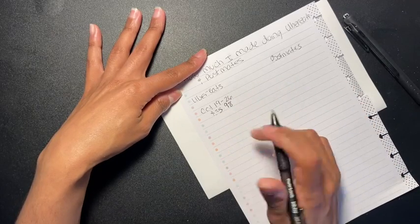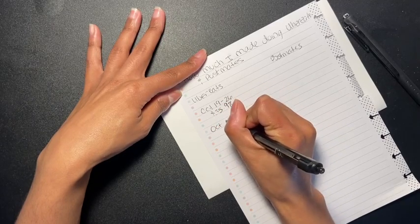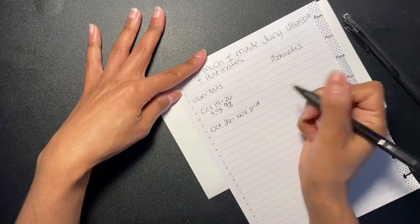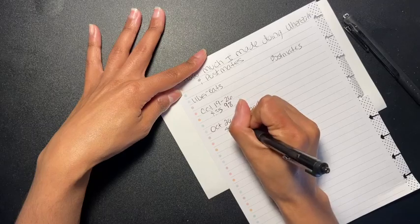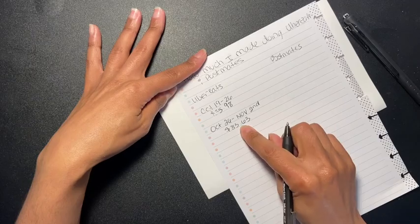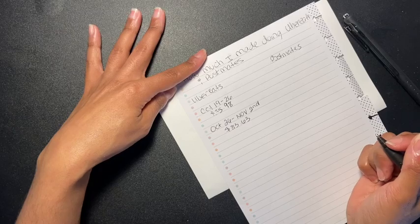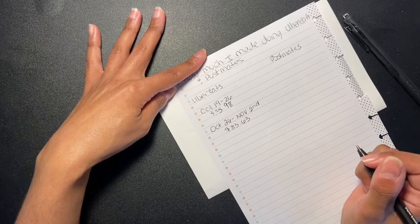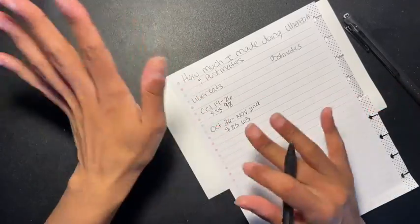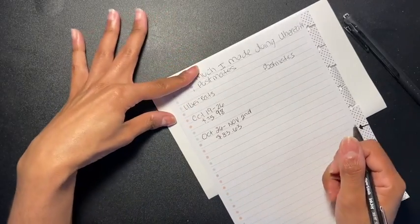This is for October 19th to the 26th. And then from October 26th through November 2nd I made $83.63, and this was nine trips guys, which to me that wasn't bad either. I'm just starting off so I don't really know the ropes on how to do things but I'm going to figure it out and I'm going to do better at this. So this is what I did for October.